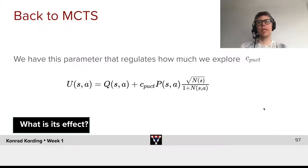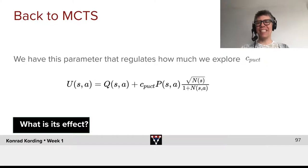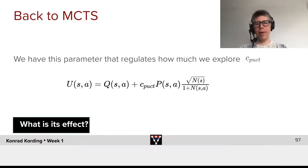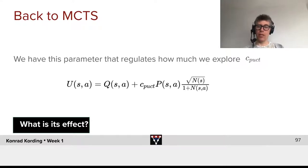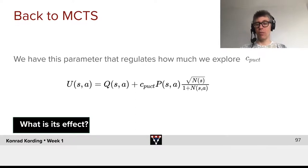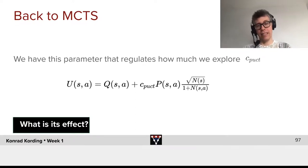Back to Monte Carlo tree search. We have this parameter that regulates how much we explore — CPU, CT. This parameter weighs the quality of the moves, Q, with the exploration — with the need to find out other things that could be good solutions.